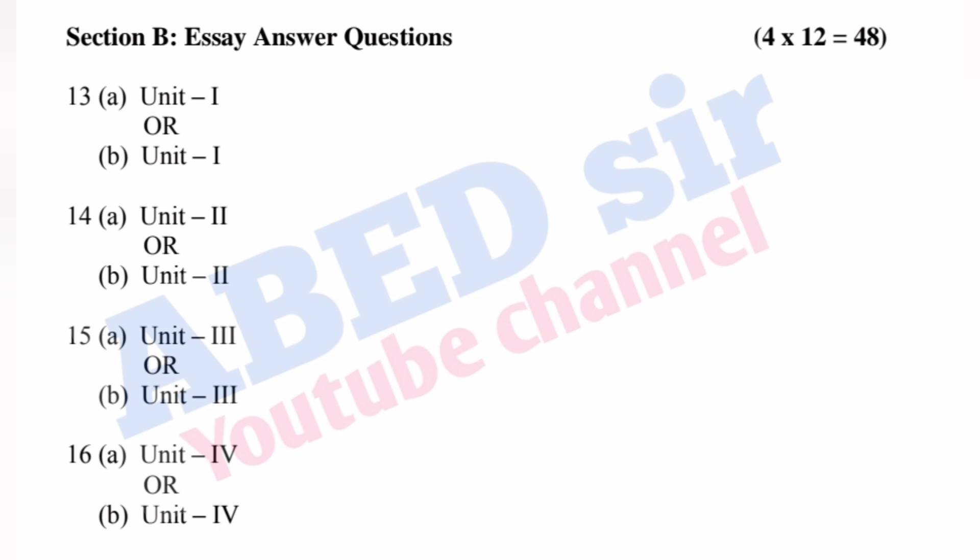In Part B, mutual choice questions are there. Total four questions will be asked. You have to answer all these four questions and each one carries 12 marks. So four 12s are 48 marks you will get from Part B. Total, 80 marks paper is there for the semester exam.